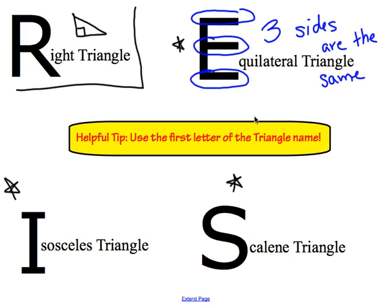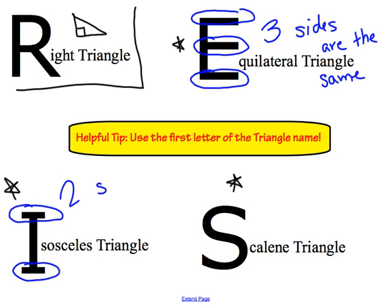Moving down to our isosceles triangle and looking at the letter I, there are two lines in that I that are the same — the top and the bottom. Therefore, in an isosceles triangle, only two sides are the same.